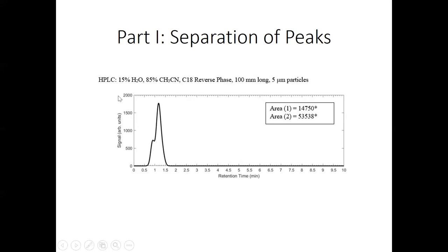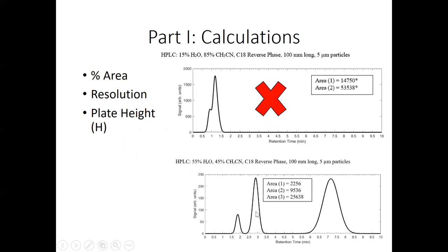And so what you would do is continue to adjust the solvent ratios until you actually got separation. We call that developing a method so that you can actually separate those peaks. And so looking at this HPLC chromatogram at the bottom, we see that we finally separated those three peaks by adjusting that solvent ratio. And once you do that, you can then do your calculations that you've learned in lecture, like calculating percent area, calculating the resolution, along with the plate height for each peak.